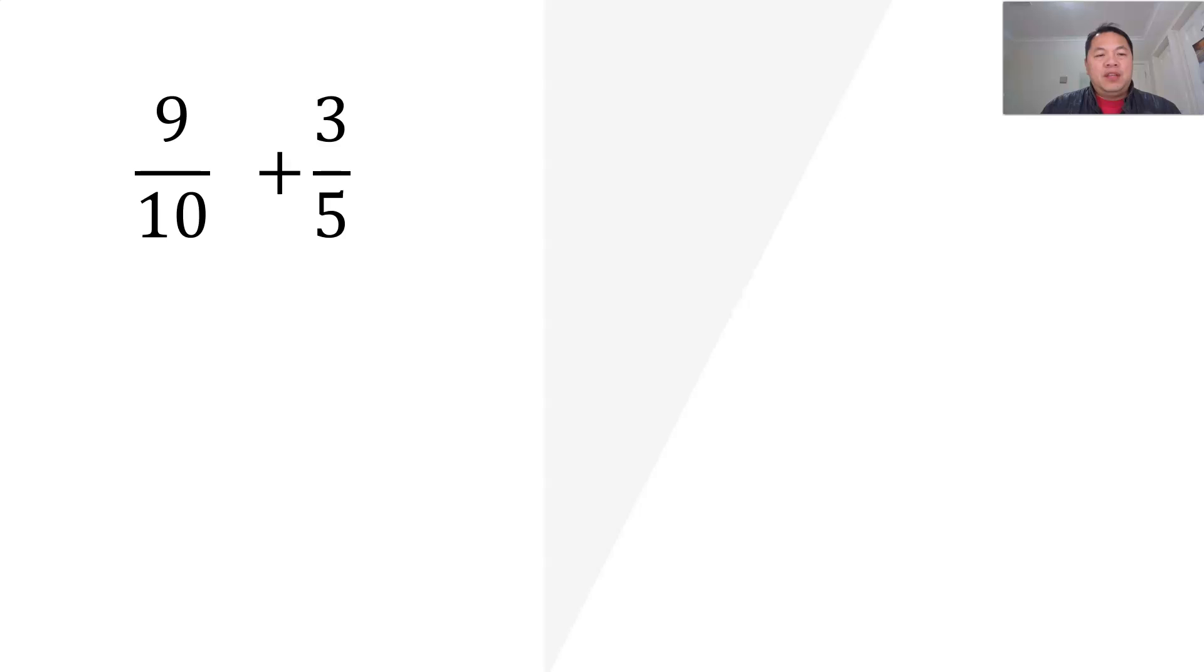Okay, moving on. Next question, 9/10 plus 3/5. So look at this again, 10 and 5. 10 is actually a multiple of 5. So again, how do I get a similar denominator? I simply need to times 2 to the denominator. And whatever I do to the denominator, I do to the numerator. So that's how I get 9/10 plus 6/10. And that's when I can add the numerator together. 15 out of 10.